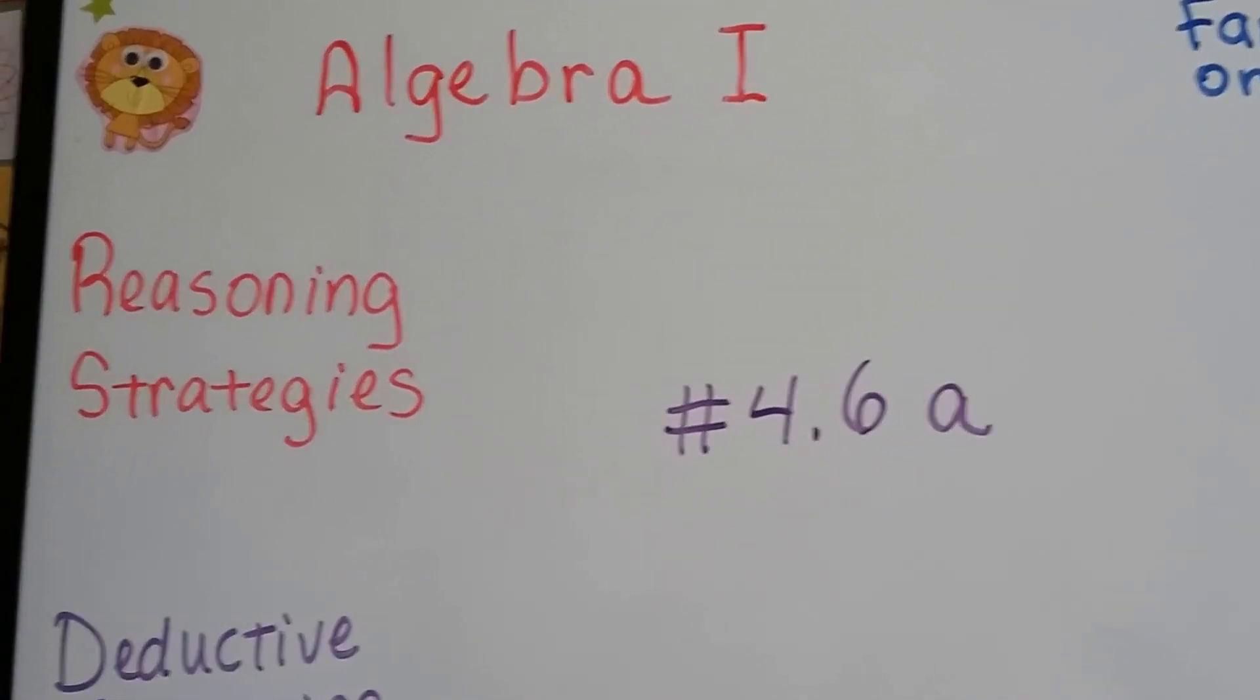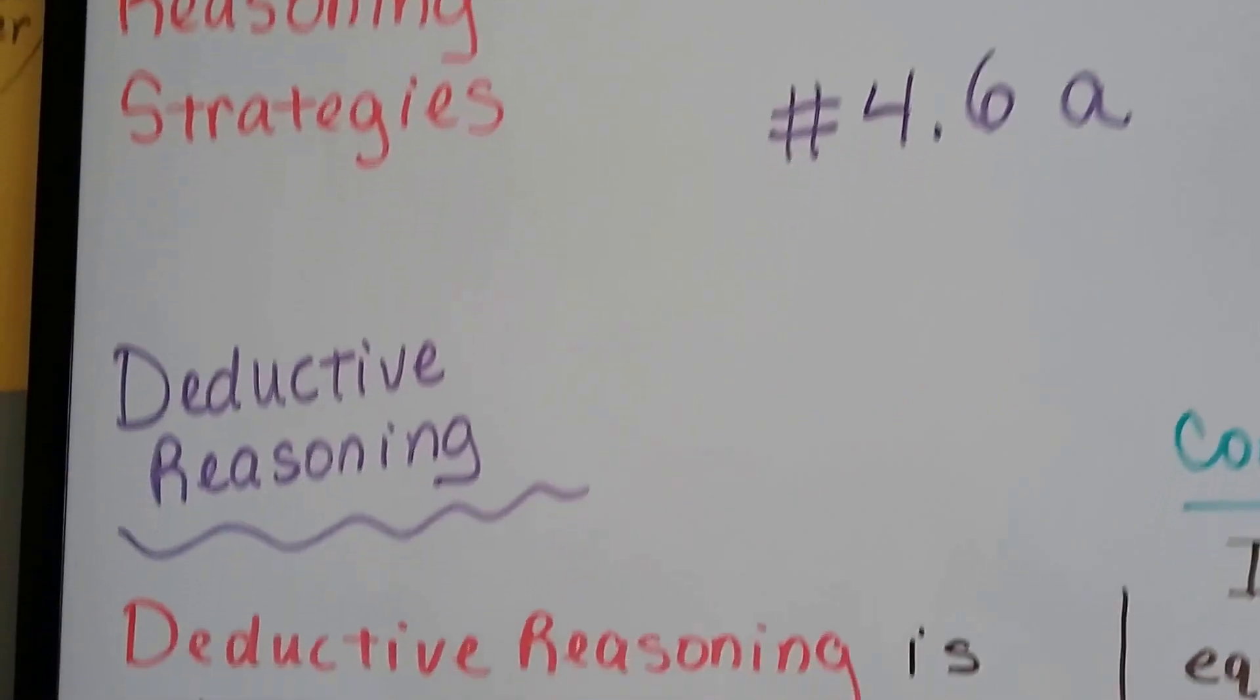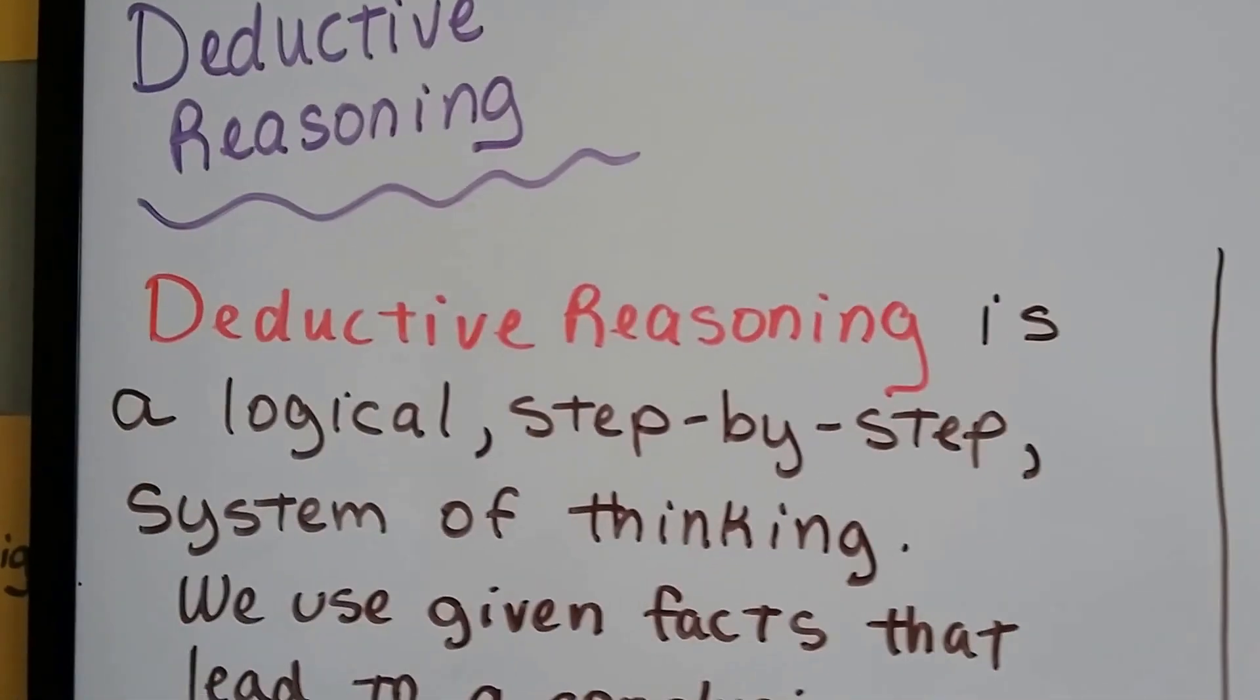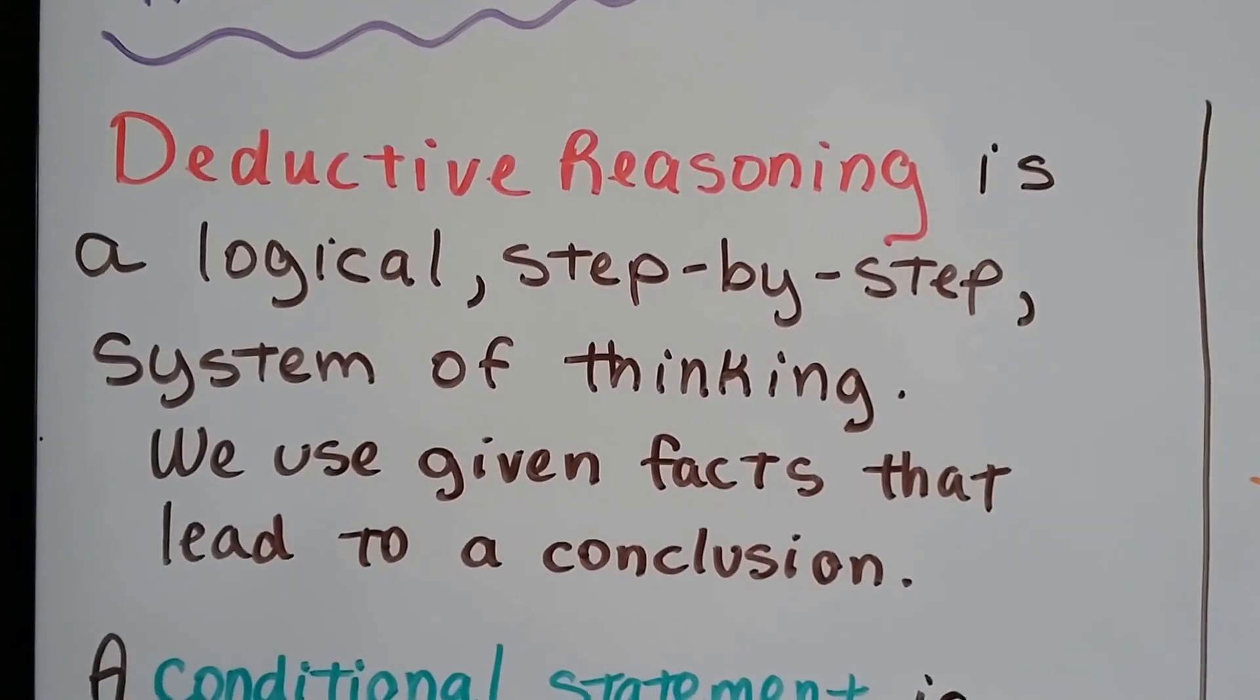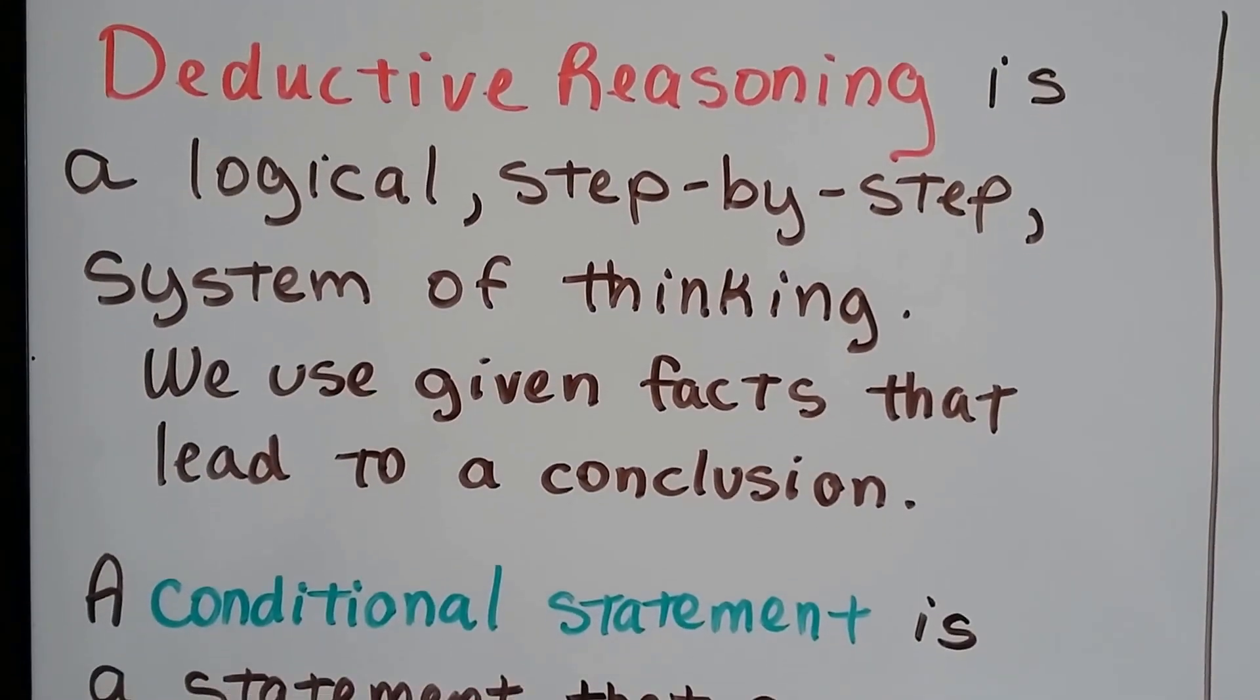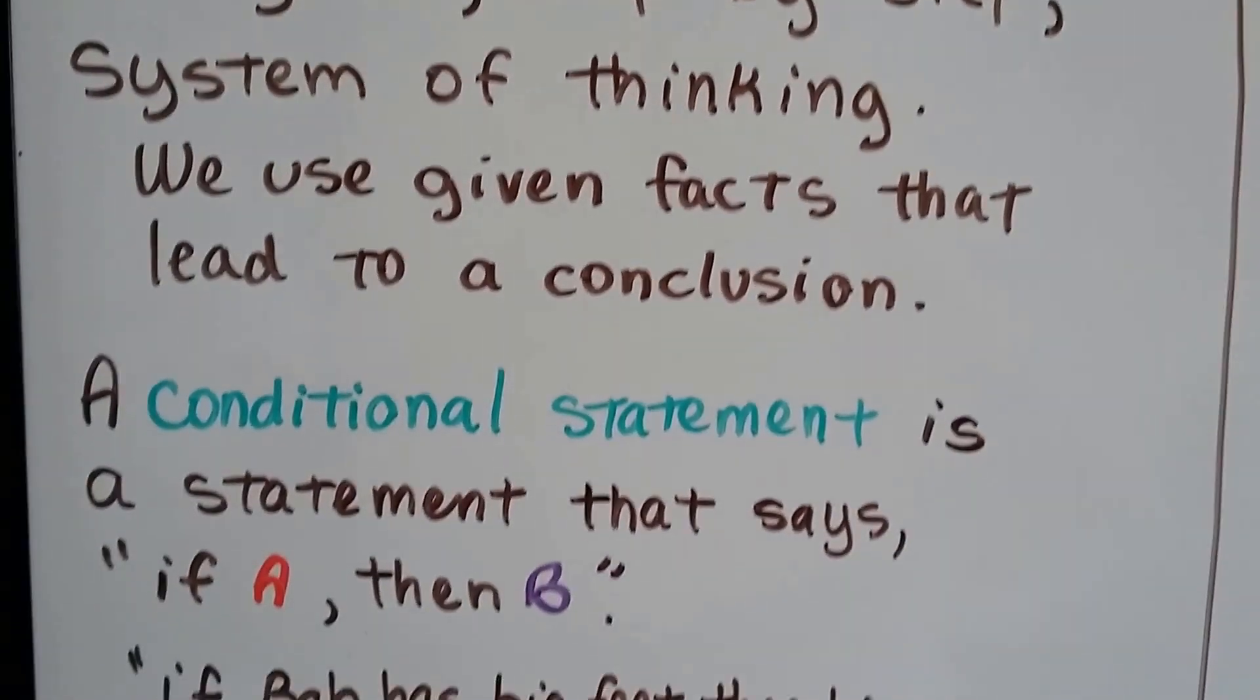Algebra 1, number 4.6a. We're talking about reasoning strategies, and now we're talking about deductive reasoning. Deductive reasoning is a logical, step-by-step system of thinking. We use given facts that lead to a conclusion.